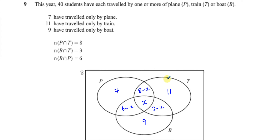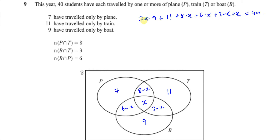To find x, I know all regions sum to 40. So: 7 + 9 + 11 + (8 minus x) + (6 minus x) + (3 minus x) + x = 40. Adding the constants: 7 + 9 is 16, plus 11 is 27, plus 8 is 35, plus 6 is 41, plus 3 is 44. For the x terms: minus x, minus x, minus x, plus x gives minus 2x. So we have 44 minus 2x = 40.